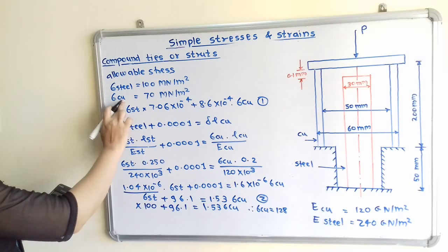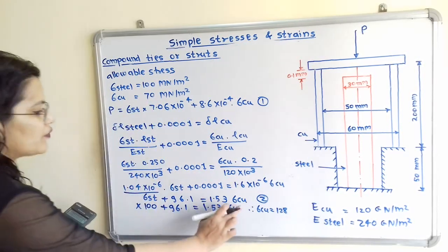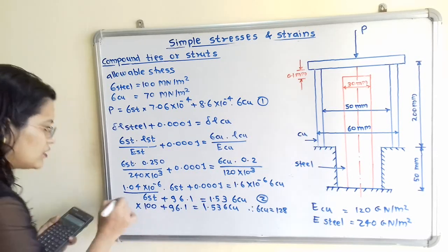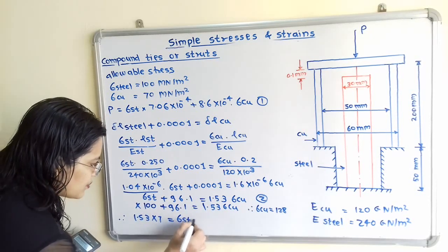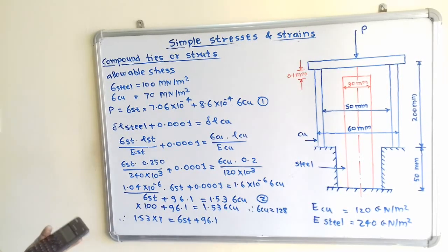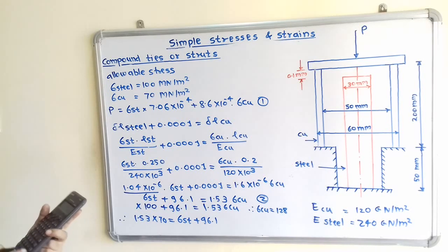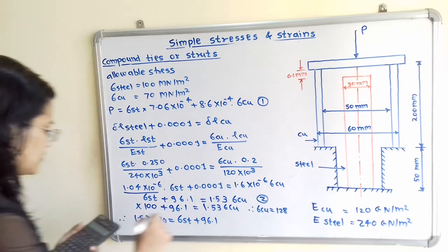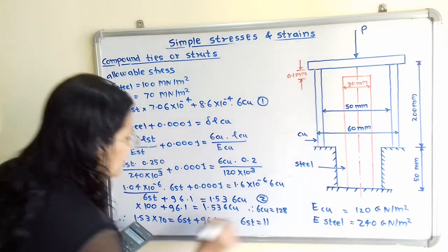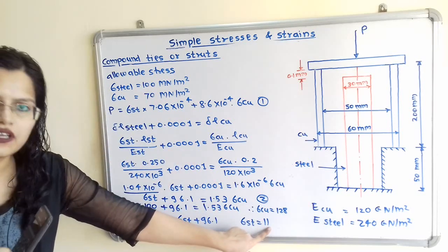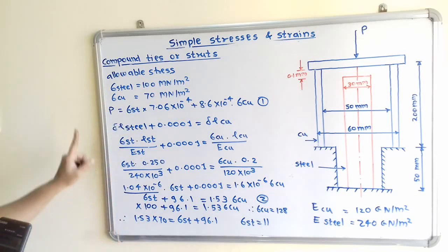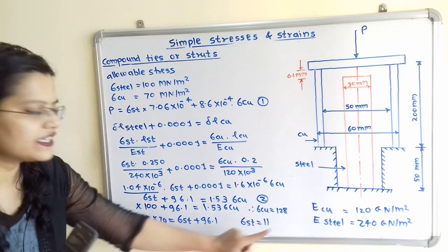Now we take the second case: sigma_copper = 70 MN/m². Substituting into equation 2: 1.53 × 70 = sigma_steel + 96.1, so sigma_steel = 1.53 × 70 − 96.1 = 11 MN/m². Since the allowable stress in steel is 100 MN/m² and 11 MN/m² is within the limit, we use sigma_copper = 70 MN/m² and sigma_steel = 11 MN/m².